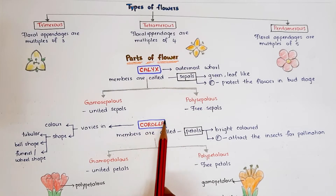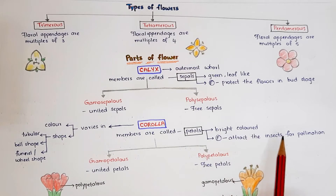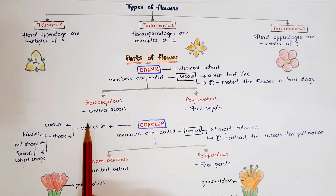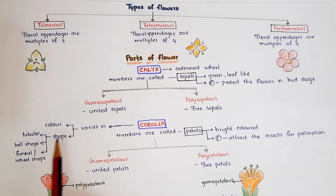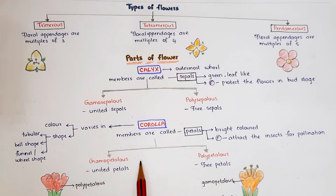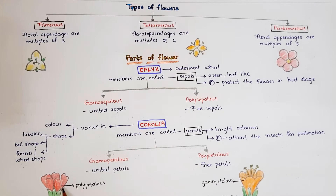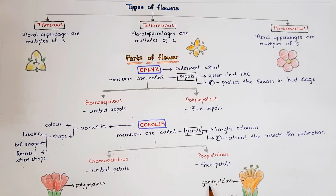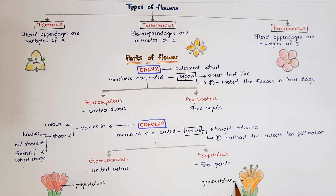Coming to corolla, the second whorl of the flower. The members of corolla are called petals. Petals are bright colored, and their main function is to attract insects for pollination. Corolla varies in color and shape — it can be tubular, bell-shaped, funnel, or wheel-shaped. Corolla is also of two types: gamopetalous, meaning united petals, and polypetalous, meaning free petals.